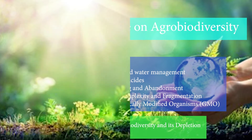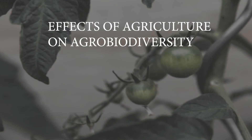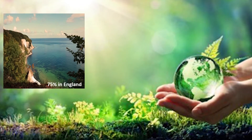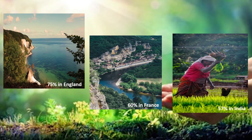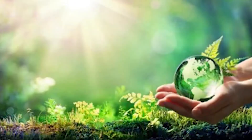There is always a gap in knowledge of agrobiodiversity and the way of its depletion. When we talk about the effects of agriculture on agrobiodiversity, agriculture is the main dominant anthropogenic factor controlling biodiversity. Agricultural area represents a majority of the land area of many countries — for example, 75% in England, 60% in France.